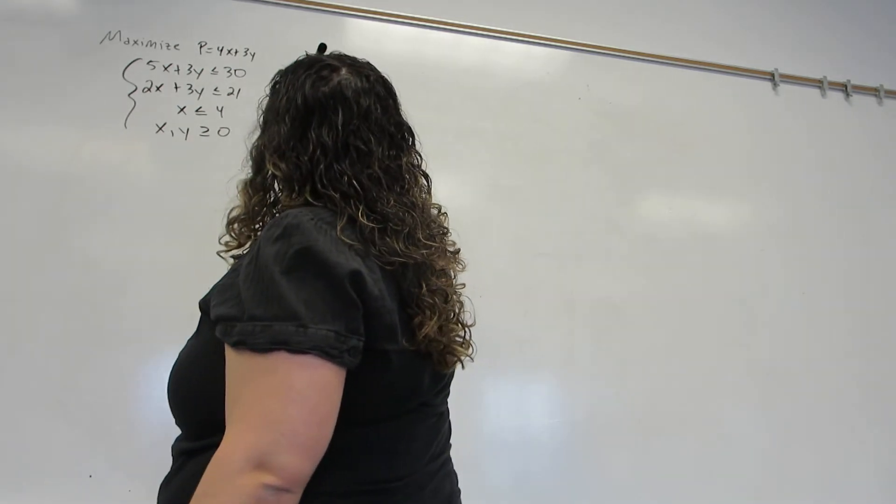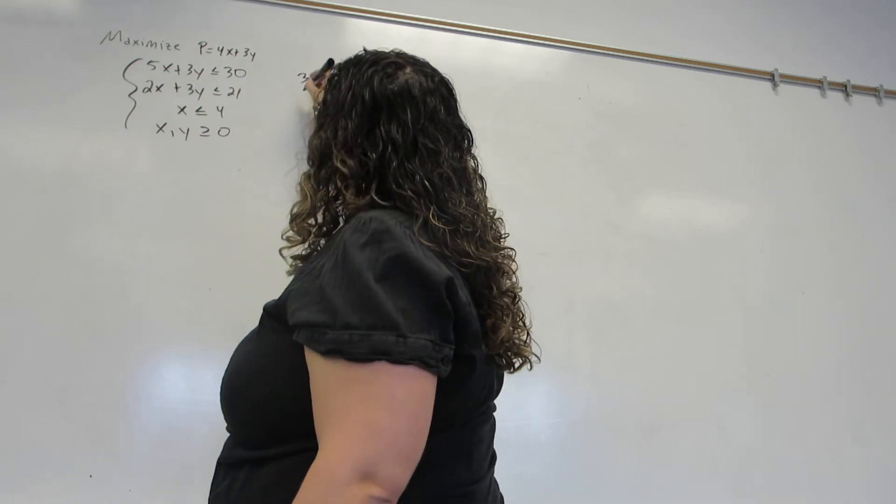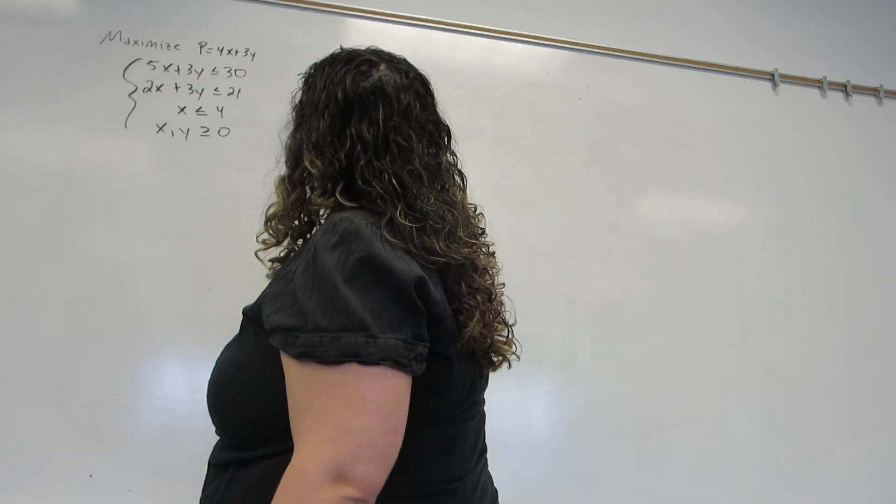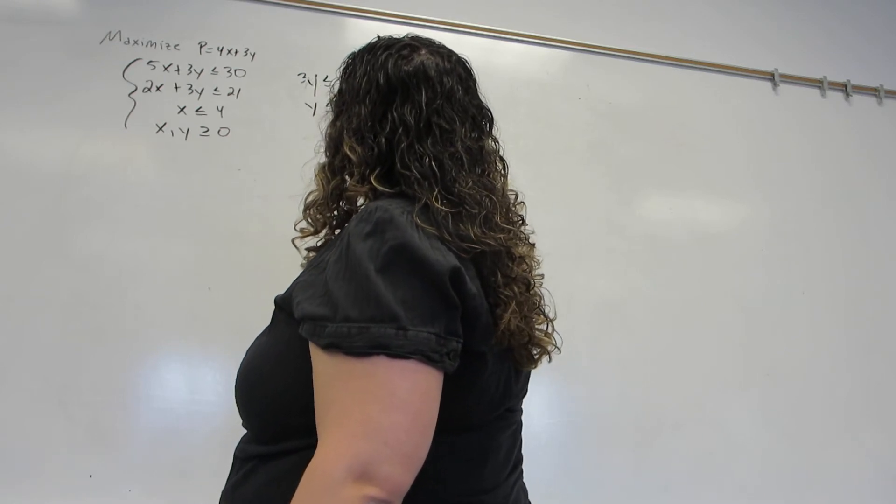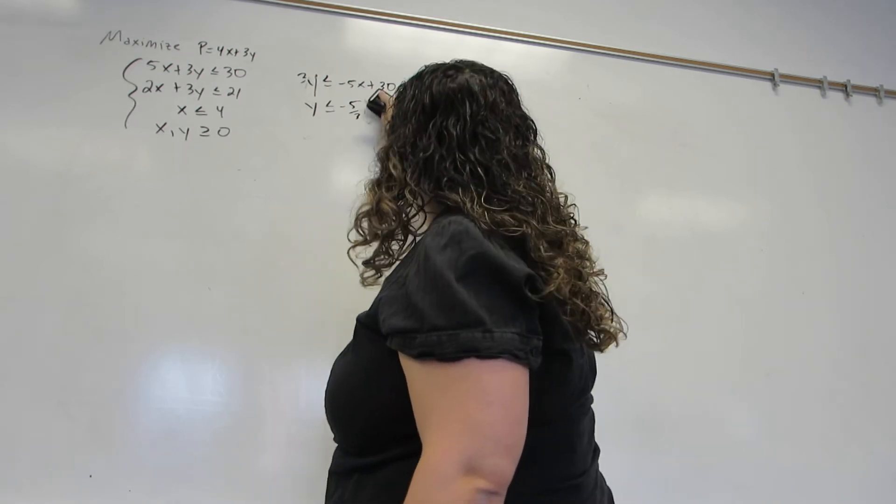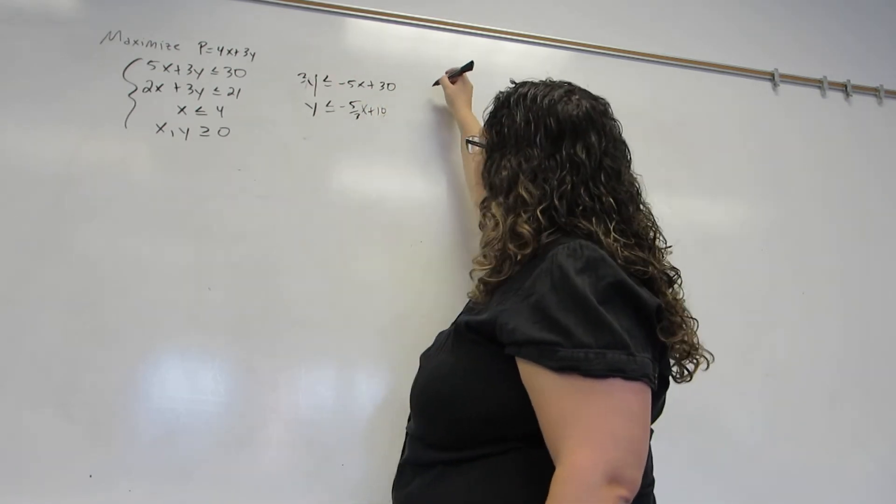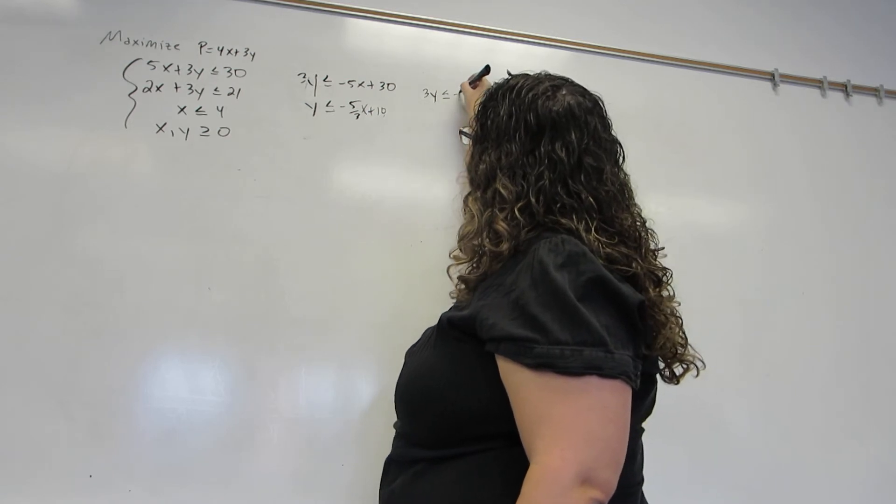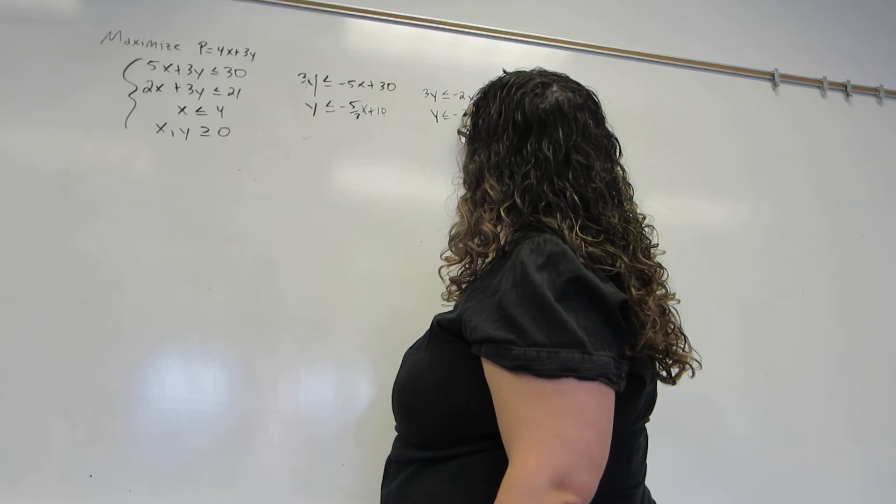So on this first one, I move the 5x over, and then I'm going to divide by 3. On the second one, I move the 2x over, and then I'm going to divide by 3.